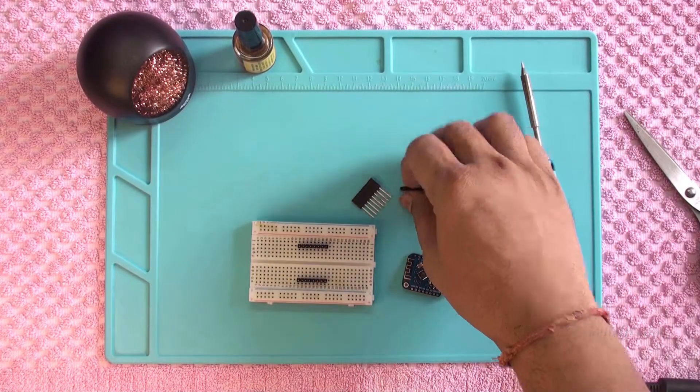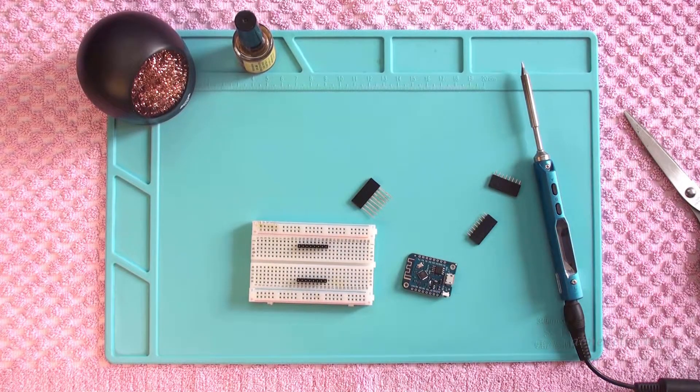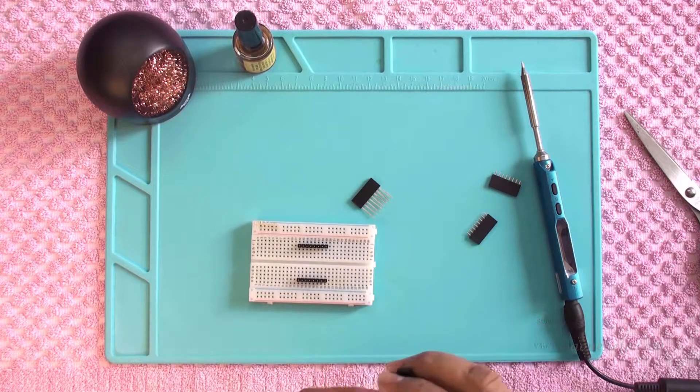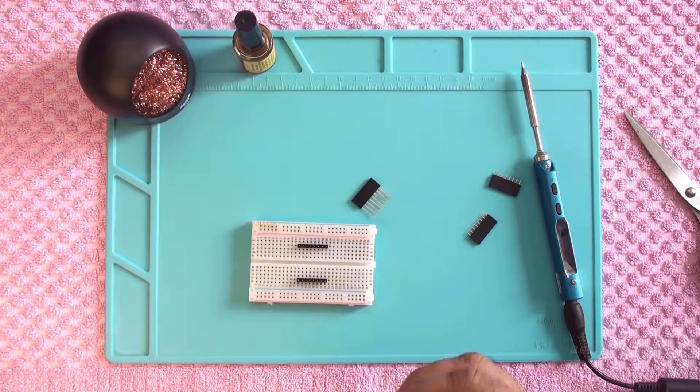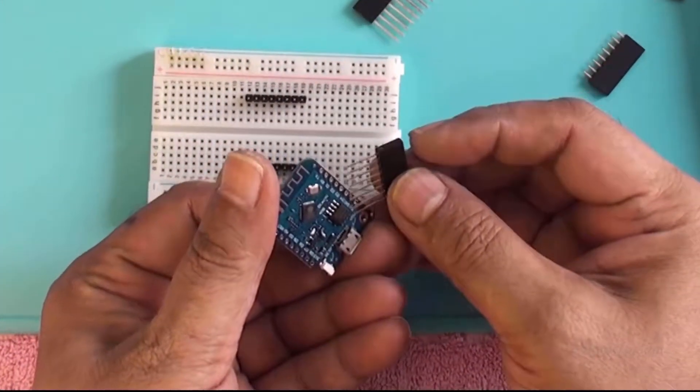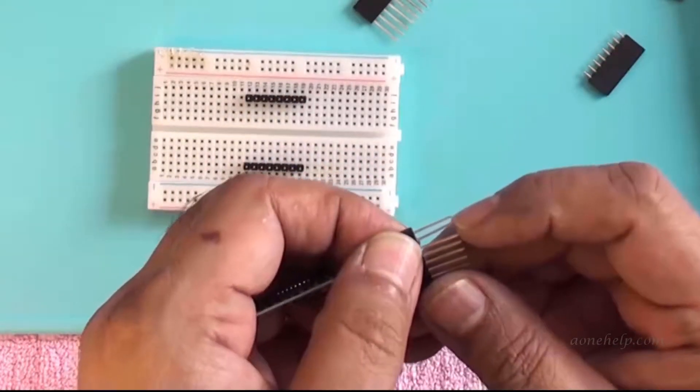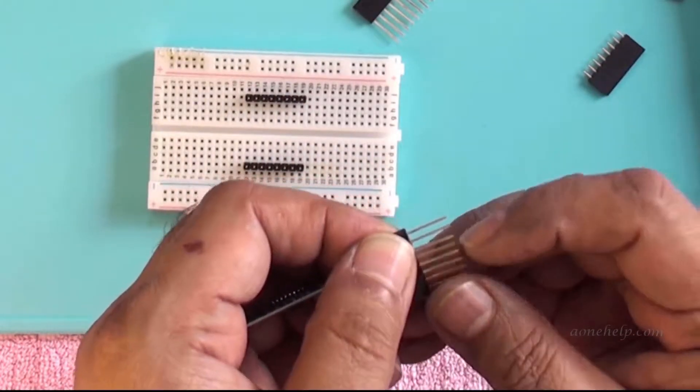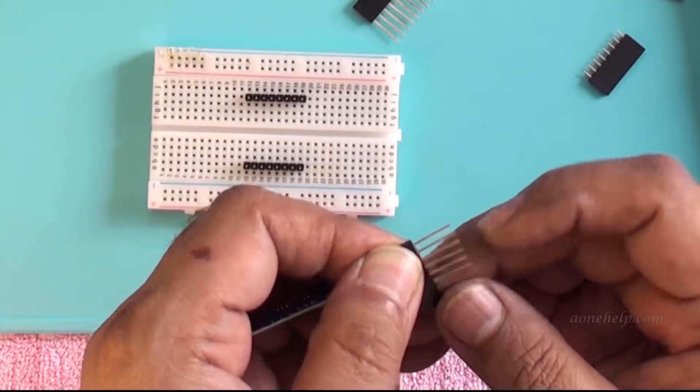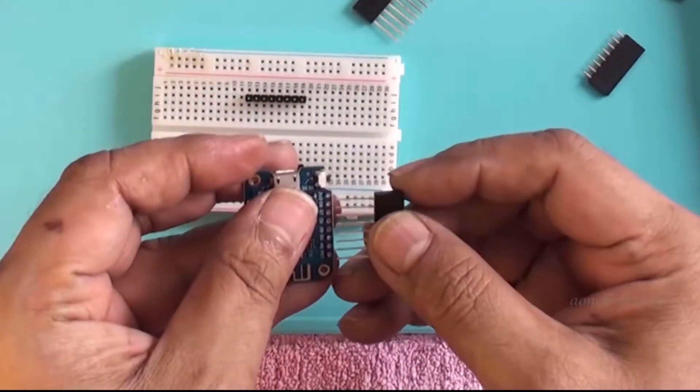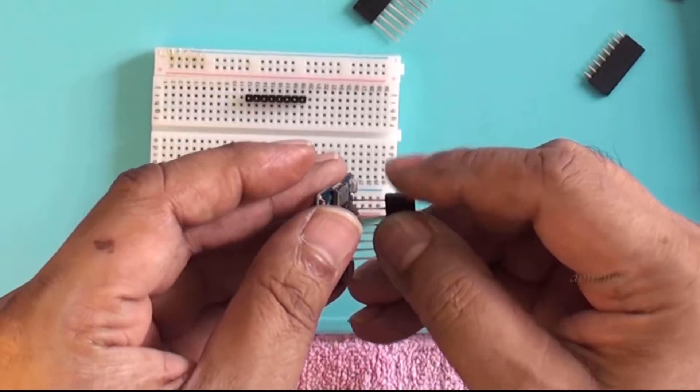Now let's discuss the process of soldering female headers with long pins. Let's insert the pins of the female headers in the module. Pins of this header are slightly bent, so let's straighten them. Now let's insert them in the module.